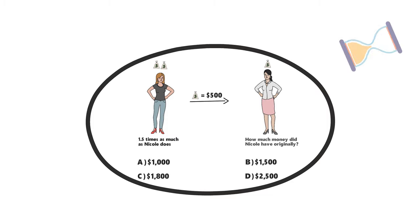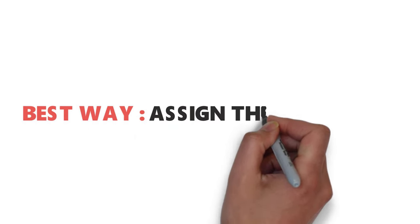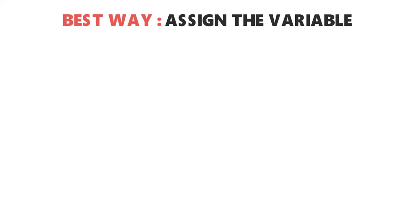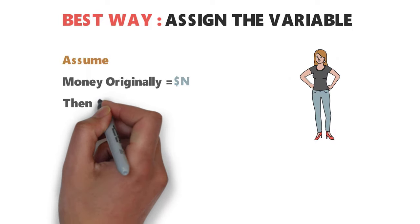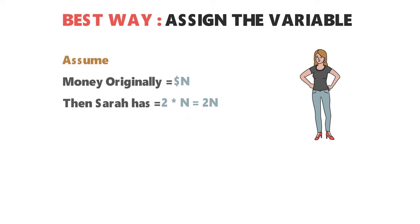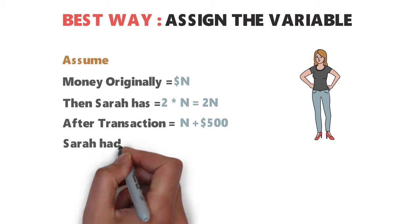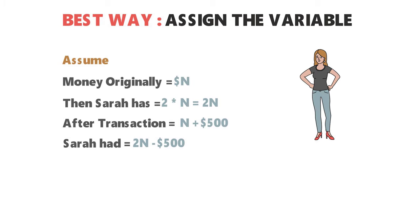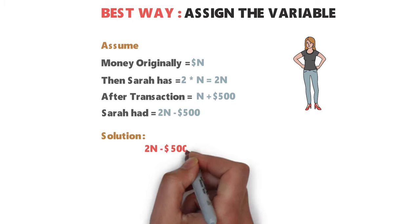The best way to solve this is to assign a variable. If Nicole originally had N dollars, then Sarah has 2N. After the transaction, Nicole has N + $500 and Sarah has 2N − $500. Based on this, we can build the expression: 2N − $500 = 1.5 × (N + $500).